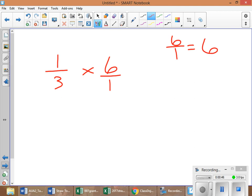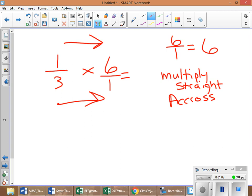Now, the best thing about fractions is there are no common denominators. All you do is you multiply straight across. So, straight across here, straight across here, you'll get your answer. So, 1 times 6 is 6. 3 times 1 is 3.